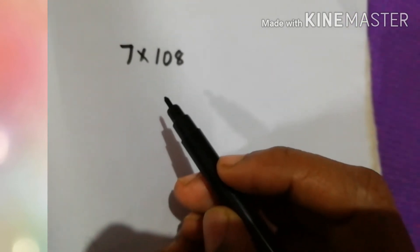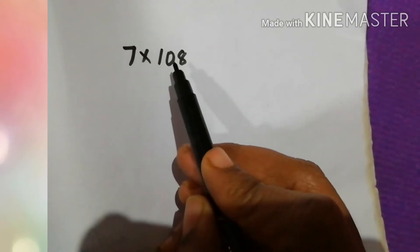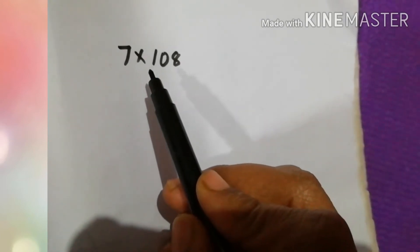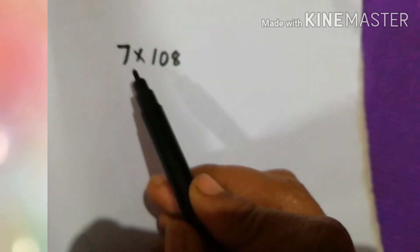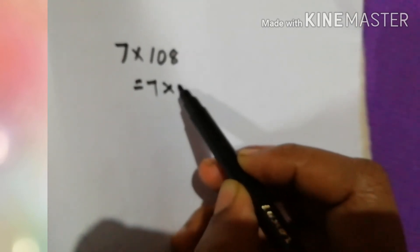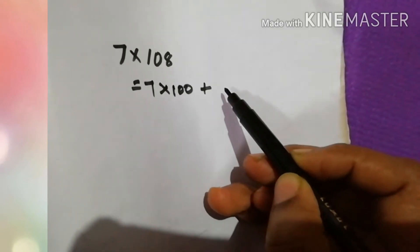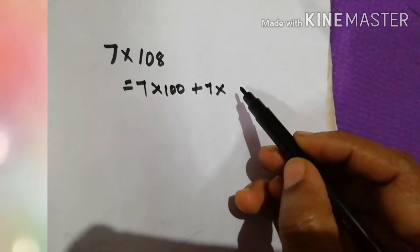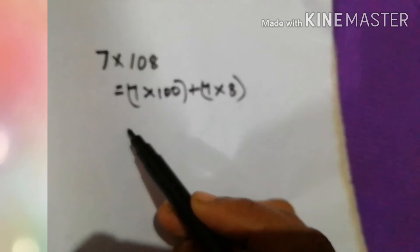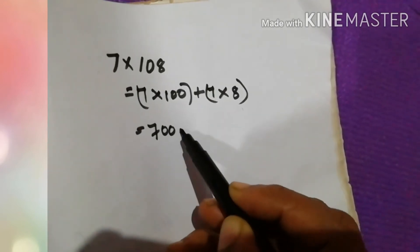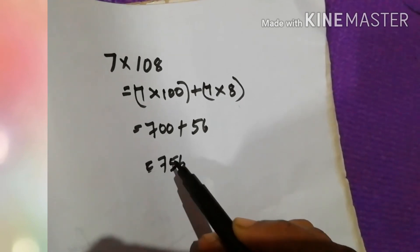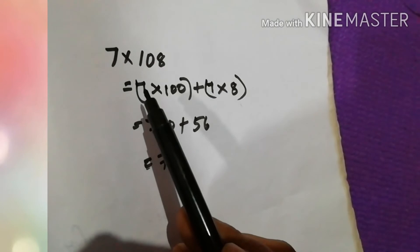Let's see another way of using brackets — expanding with brackets. Here we want to multiply 7 with 108. This multiplication is a little difficult, so for an easier method we can expand it like this: 7 into 100 plus 7 into 8. We can easily multiply a number with 100 to get 700, plus 7 into 8 is 56. We got our answer, 756. So it is a method of using brackets by expanding.